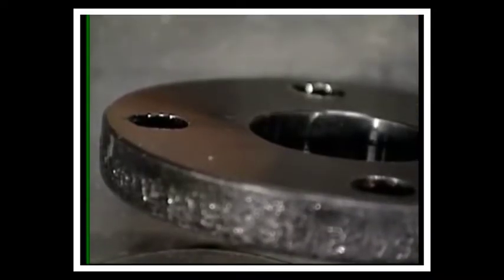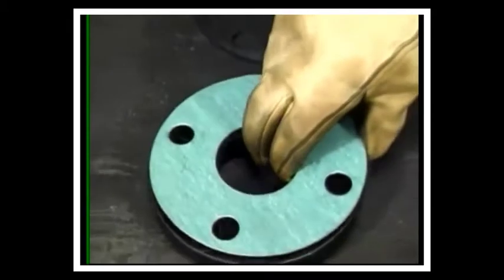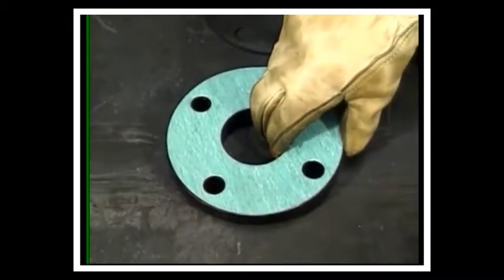The entire mating surface of flat-faced flanges is flat. Gaskets are either ring type or full face, which cover the entire flange surface with holes in the gasket for the bolts.